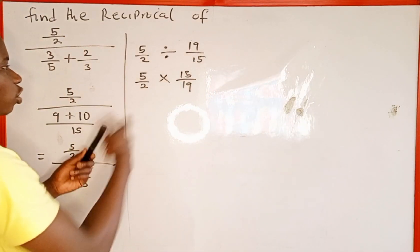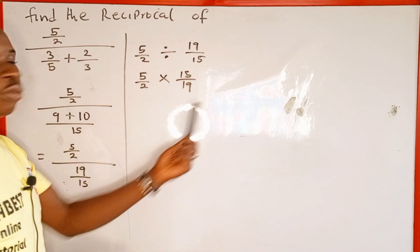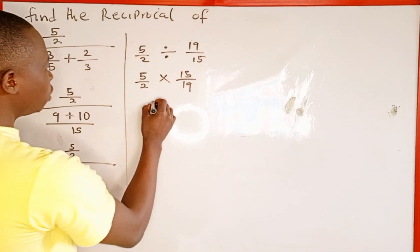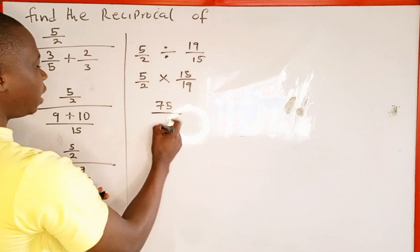And now we're going to multiply the fractions. In multiplication, we multiply the numerator, then we multiply the denominator. So 5 multiplied by 15 is going to give us 75 over 2 multiplied by 19 is going to give us 38.